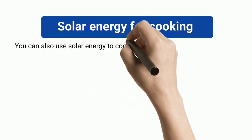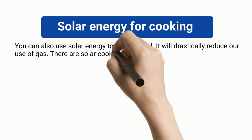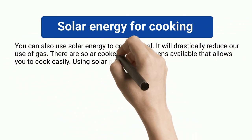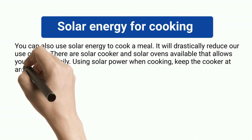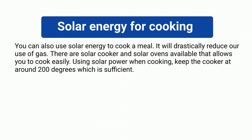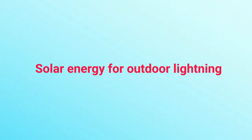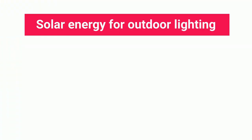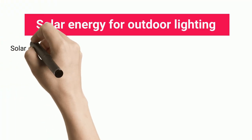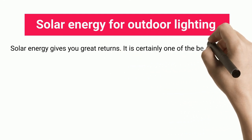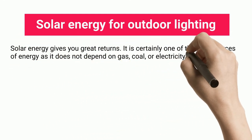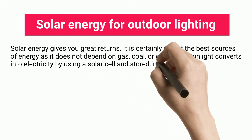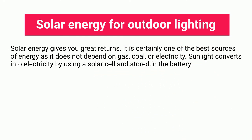Solar energy for cooking: you can use solar energy to cook a meal, which will drastically reduce gas usage. Solar cookers and solar ovens are available that allow you to cook easily using solar power — keeping the cooker at around 200 degrees is sufficient. Solar energy for outdoor lighting gives great returns and is one of the best energy sources, as it does not depend on gas, coal, or electricity. Sunlight is converted into electricity using a solar cell and stored in a battery.